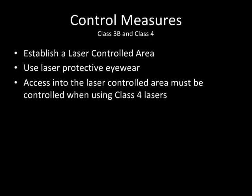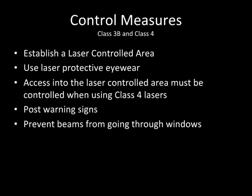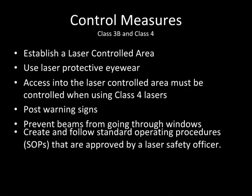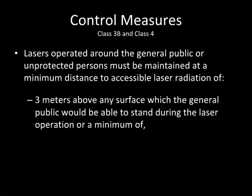When using Class 4 lasers, access into the laser controlled area should be controlled. Post warning signs at the entrance to laser controlled areas. Prevent the possibility of the beam going through a window. Create and follow standard operating procedures that are approved by a laser safety officer. Lasers operated around the general public or unprotected persons must be maintained at a minimum distance of 3 meters above any surface the general public would stand on, or a minimum of 2.5 meters in lateral separation.